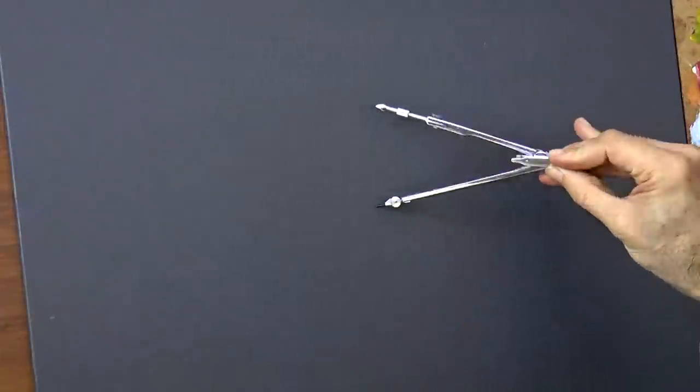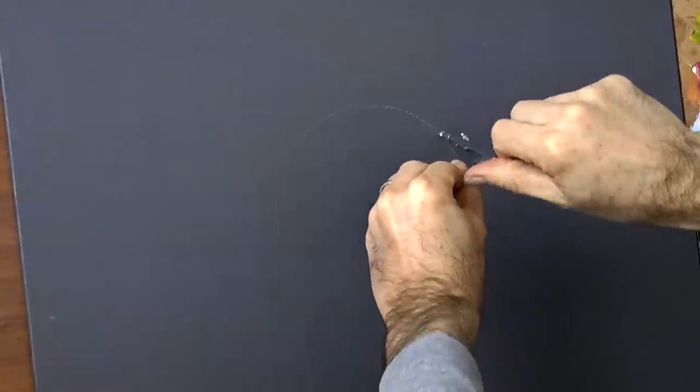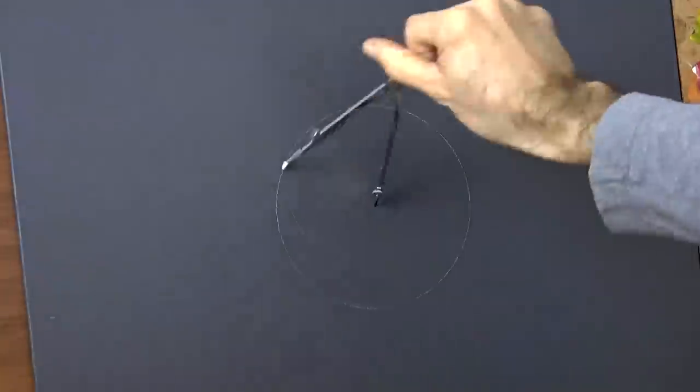We begin by drawing a circle with a compass. Previously I toned the canvas and it is already dry. We trace a line with a ruler which will be the end of the table.